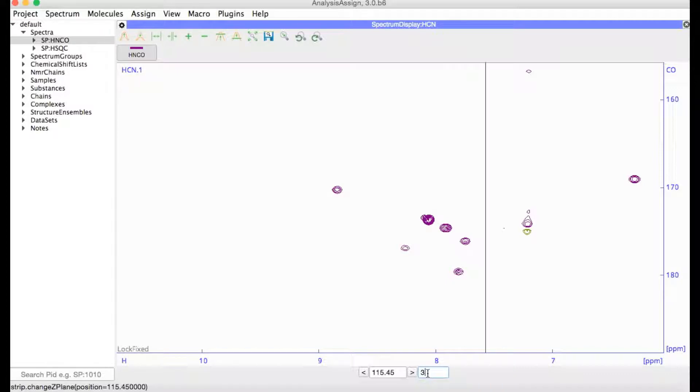Now at the moment, I'm looking at the spectrum with carbon along y and nitrogen along z. If I'd like to look at the planes the other way around, I can just swap the y and z-axis with yz.